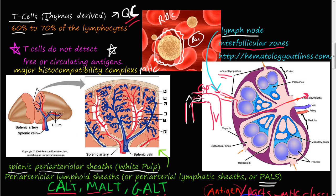This picture is depicting a T cell floating in the blood, and this is a red blood cell here. T cells do not detect free or circulating antigens. If there's a bacteria here in this blood vessel, this T cell won't directly recognize that bacteria — it has to go through an intermediate, which is the major histocompatibility complex. That's what T cells communicate with.